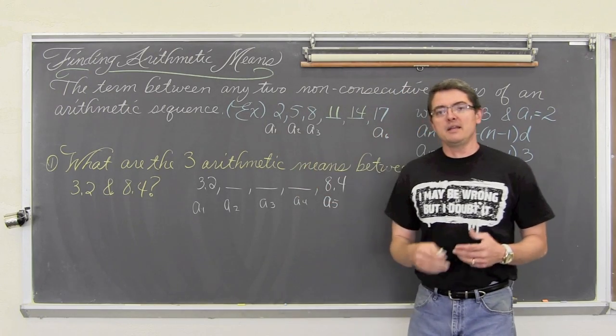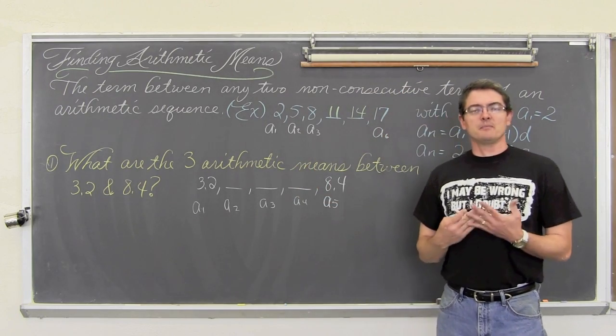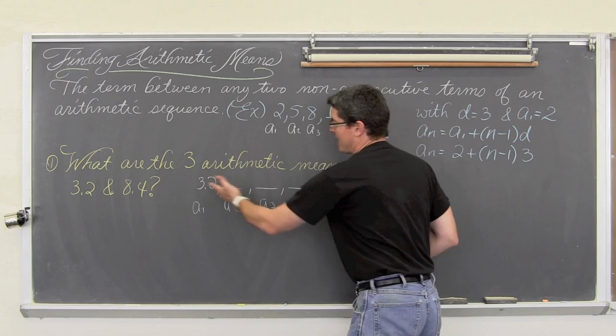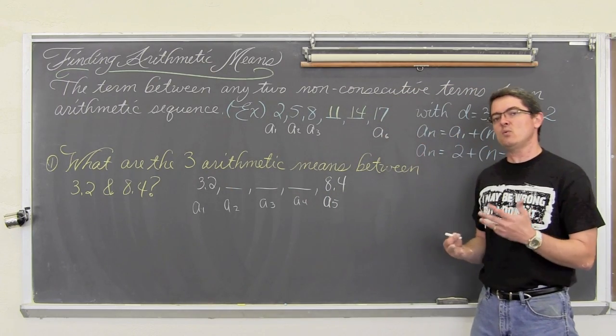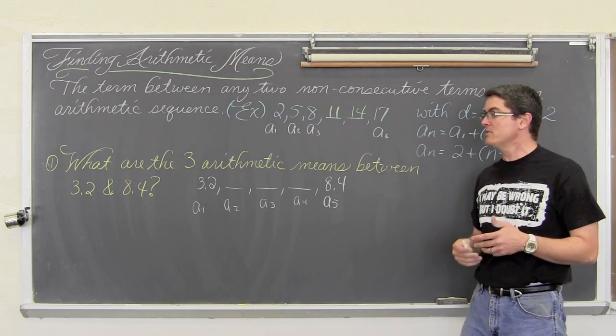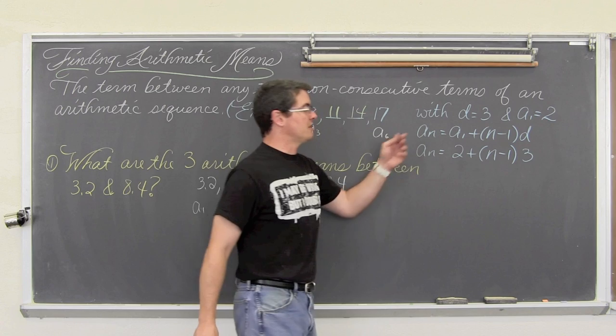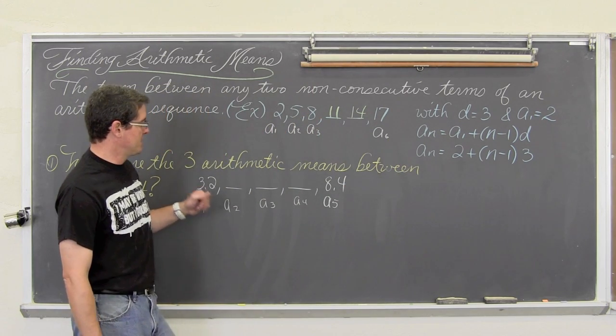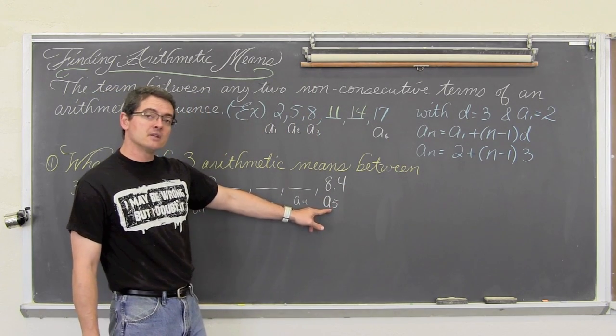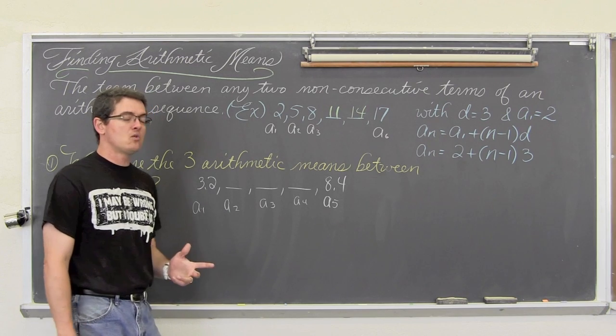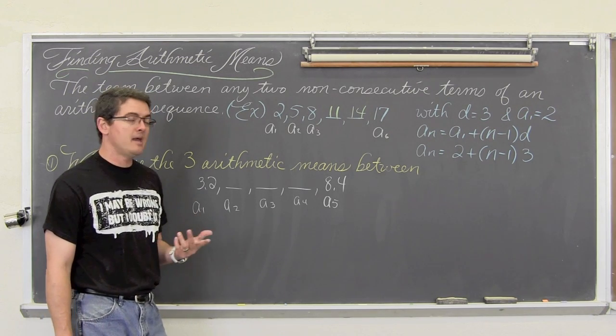Now like the previous example, I need to know what the common difference is, but I don't have any more of the sequence to see what the common difference is. So we are going to use this a sub n formula to figure that out. a sub 1 is 3.2, and a sub 5, the last known term in the sequence, is equal to 8.4.